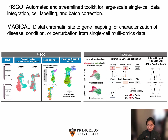After auto-labeling is done, further refinement is allowed if canonical markers are known. MAGICAL is a hierarchical Bayesian framework that can capture the looped regulation units associated with disease for any given cell subtypes.